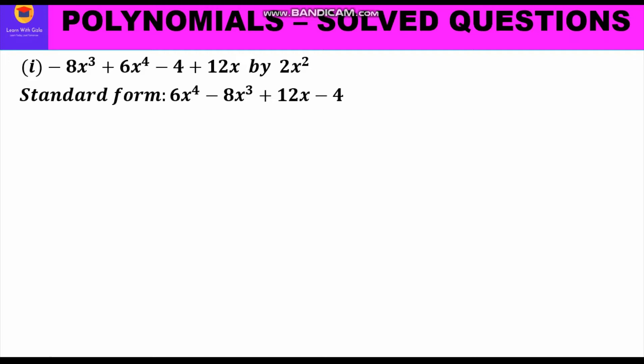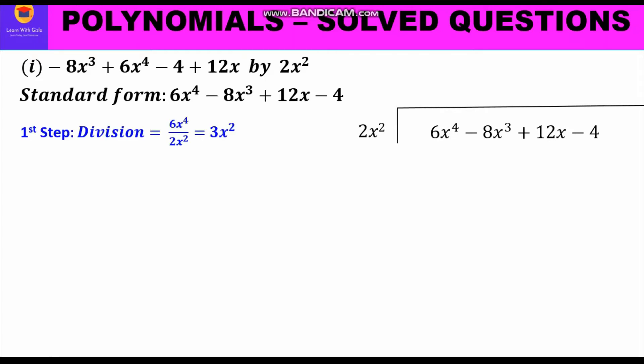Now we shall set up the problem. The divisor comes outside and the dividend comes inside. So we write 2x² outside and 6x⁴ minus 8x³ plus 12x minus 4 inside the bracket. We start the long division with the first step: division of the first term of the dividend by the divisor. That is 6x⁴ divided by 2x², which equals 3x².